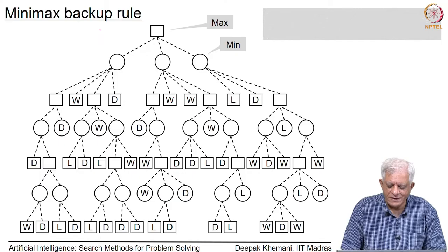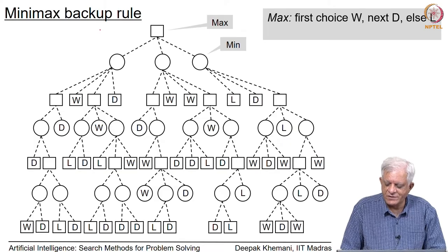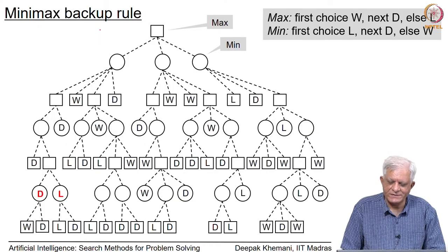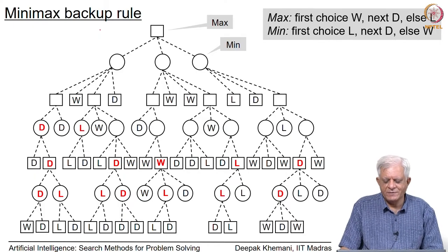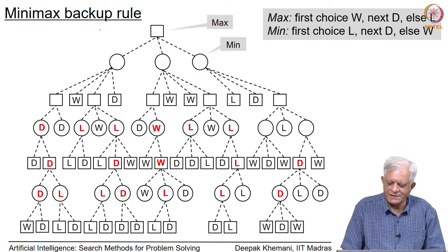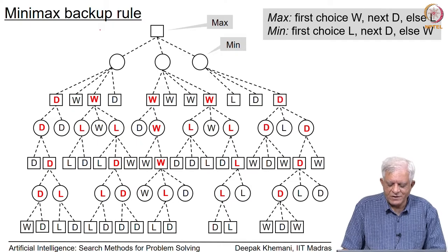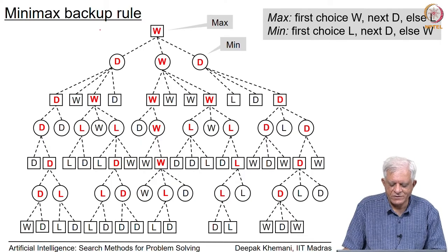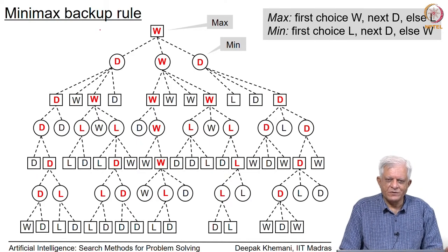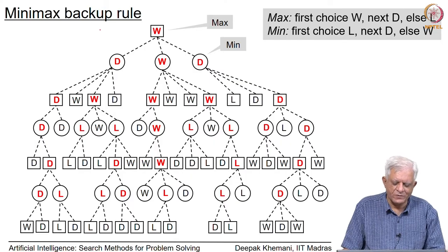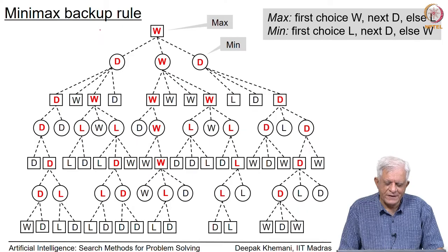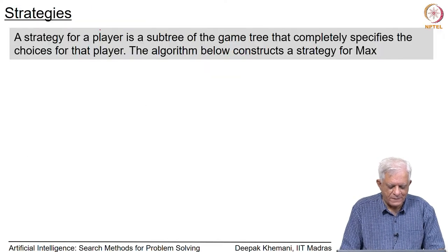You could also use the nomenclature of three labels — win (W), draw (D), or loss (L). Max's first choice is W; if not W then D; else L. Likewise Min's first choice is L; if not, D; else W. The numerical notation (+1, 0, -1) and the word notation (W, D, L) are equivalent. As we move forward we will tend toward the numerical notation for reasons that will become clear.